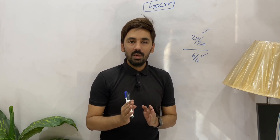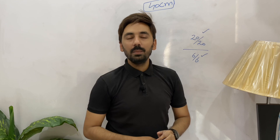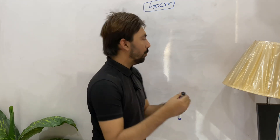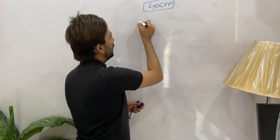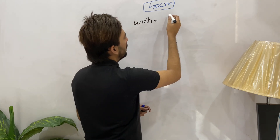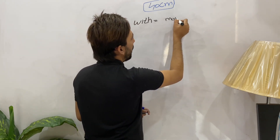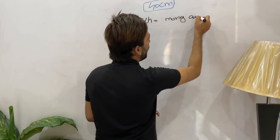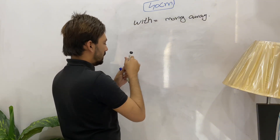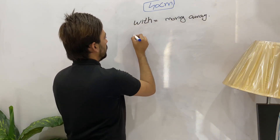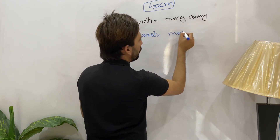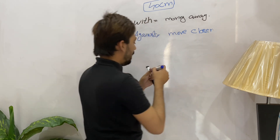We will perform retinoscopy from 40 centimeters and observe whether there is with movement or against movement inside the patient's pupil. If you find with movement at 40 centimeters, you will move the retinoscope away from the patient to neutralize that with movement. If you find against movement, you will move closer to the patient.